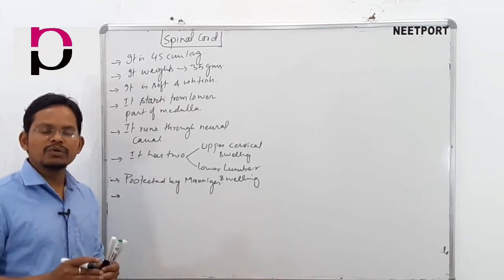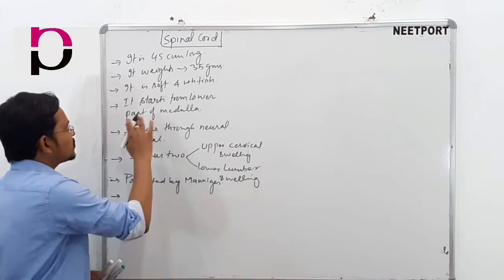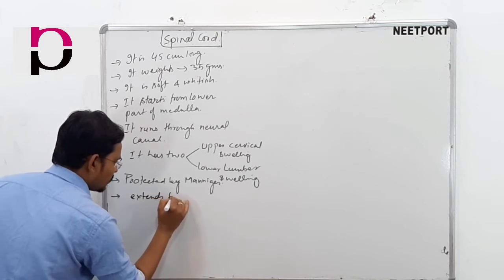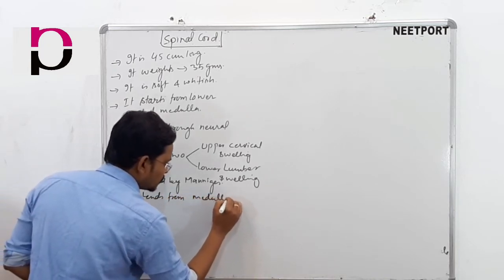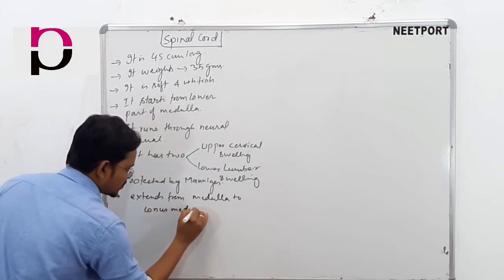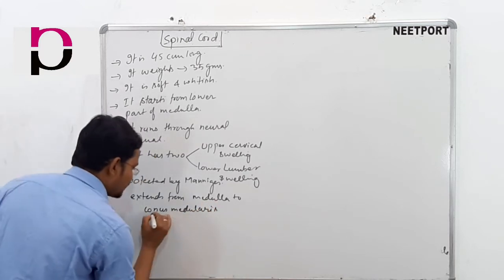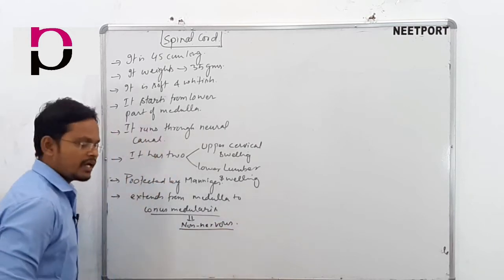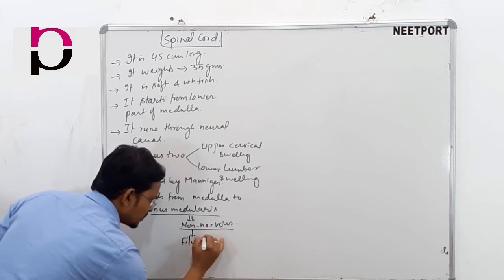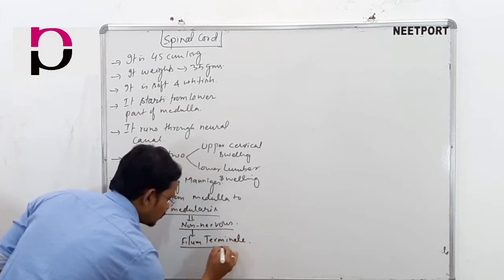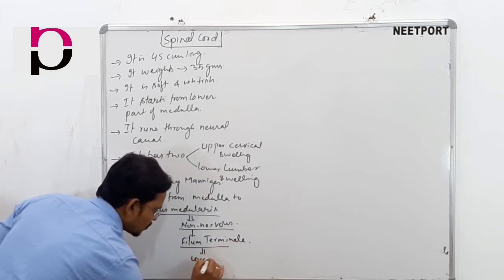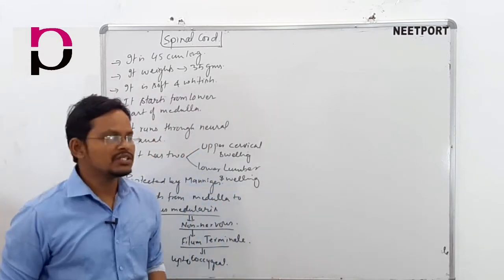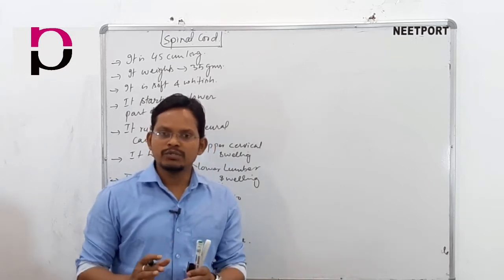This is the spinal cord. This is the lower part of the medulla. After that, there is the conus medullaris. This part is non-nervous, and this part is called the filum terminale, which extends up to the coccygeal region. So, this is a spinal cord which is about 45 cm long and weighs about 35 grams.